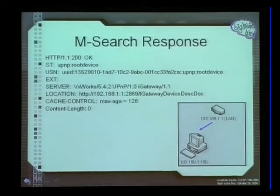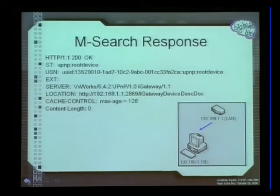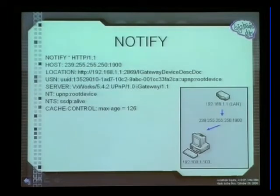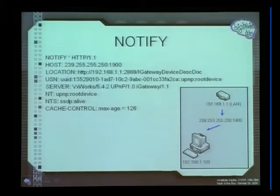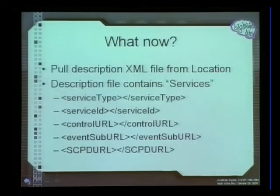The response tells you what address to contact the device at and other information about how they want to be spoken to. The USN provided is so that if you have multiple devices of the exact same class with the exact same name, you can still find them uniquely. Alternatively, I can just sit and wait for a device to come to me. This is the same device — it's been sitting out there and it's just telling me it's alive, ready and willing to receive packets.